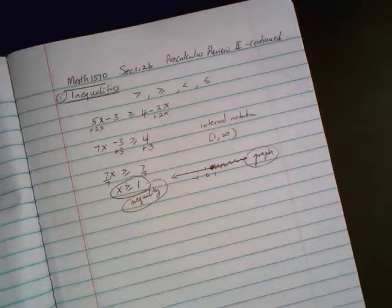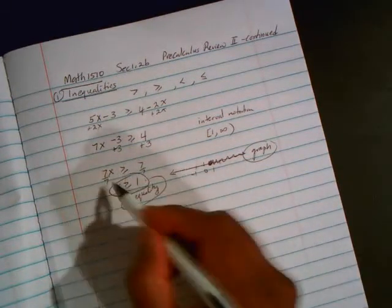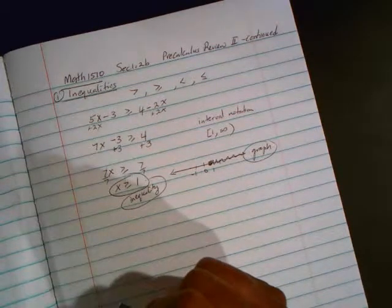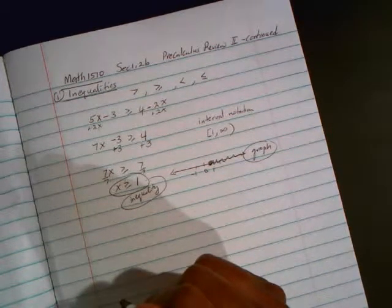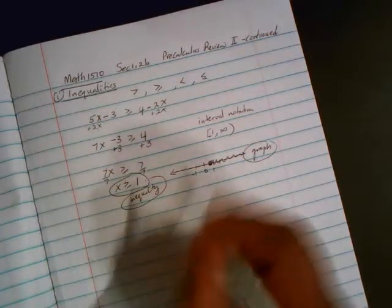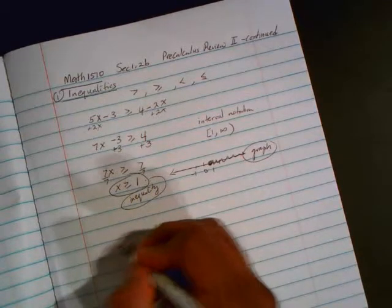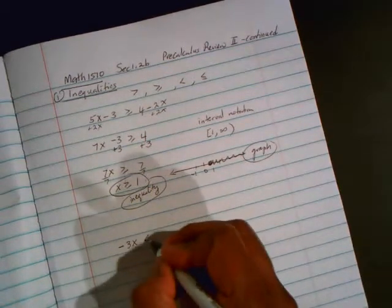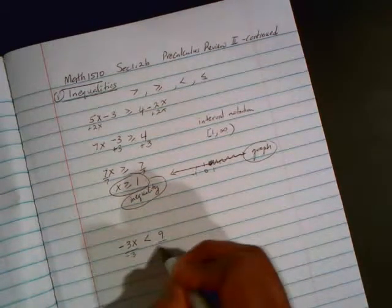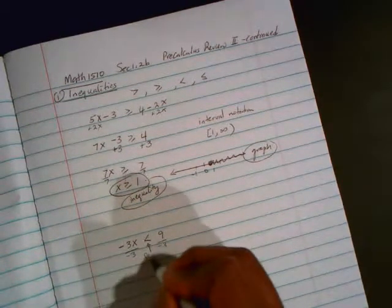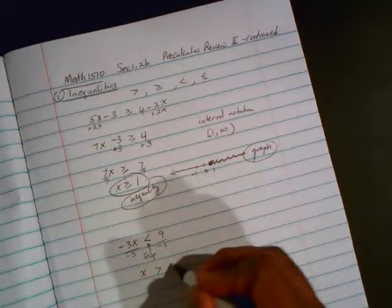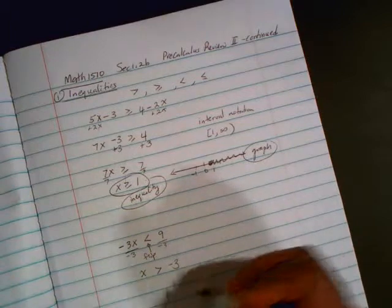The big thing in inequalities is when you are dividing. In this case, we divided by 7. No issues. But if you divide or multiply by a negative number, the sign, the inequality's direction will flip. So if, for example, you have negative 3x is less than 9. To get x by itself, you're going to divide by negative 3. But you must flip that sign. So you get x is greater than 9 divided by negative 3 is negative 3.